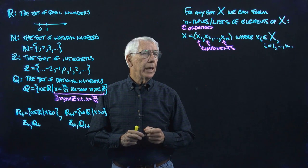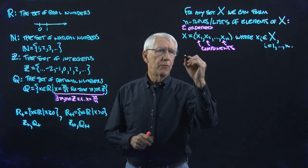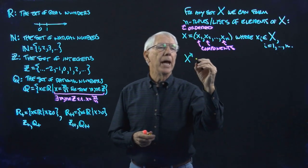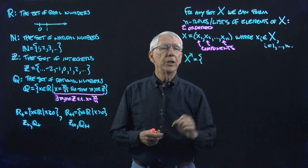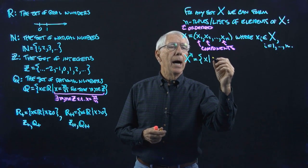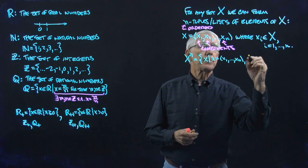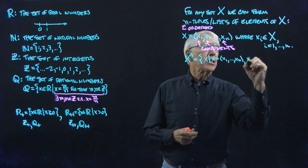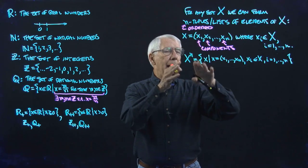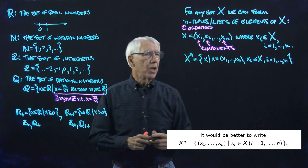And we have a notation that we use for the set of all n-tuples from a set X. That would be X to the n, or just Xn. And that is, by definition, the set of all X such that X equals X1 to Xn, XI in X, I equals 1 to n. This is just a notation for the set of all n-tuples drawn from some set X.